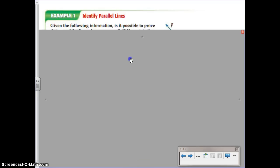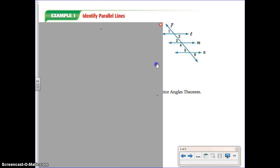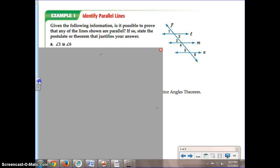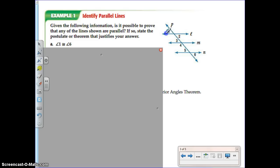Example 1, identify parallel lines. So let's look at this picture. If we are given that angle 1 is congruent to angle 6, let's mark that in our picture. Angle 1 is congruent to angle 6.